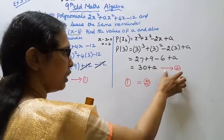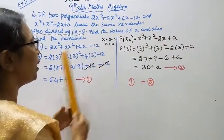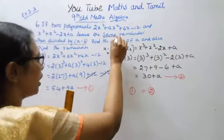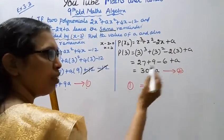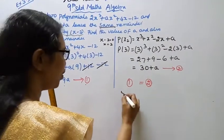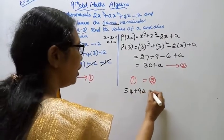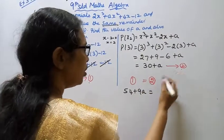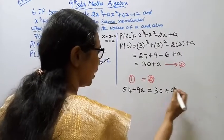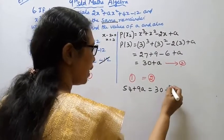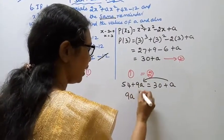Since the two polynomials leave the same remainder, we set them equal: 54 plus 9a equals 30 plus a. Rearranging: 9a minus a equals 30 minus 54.